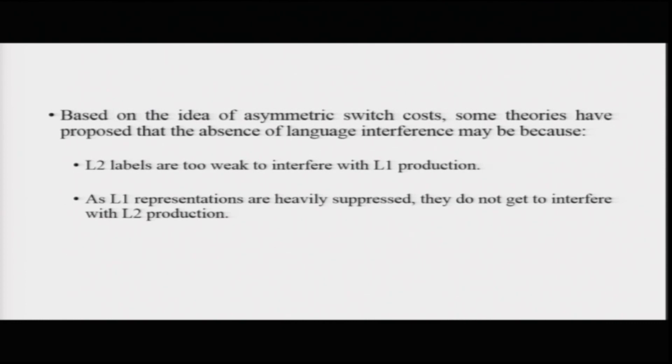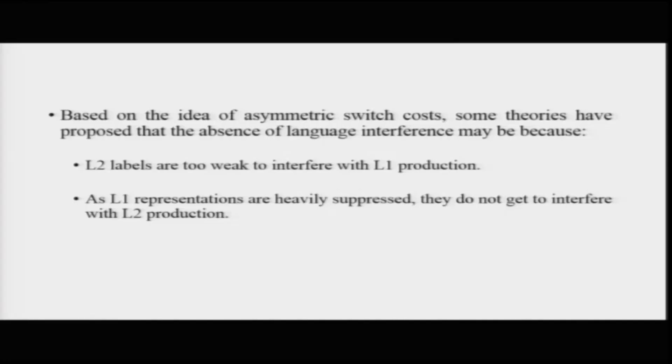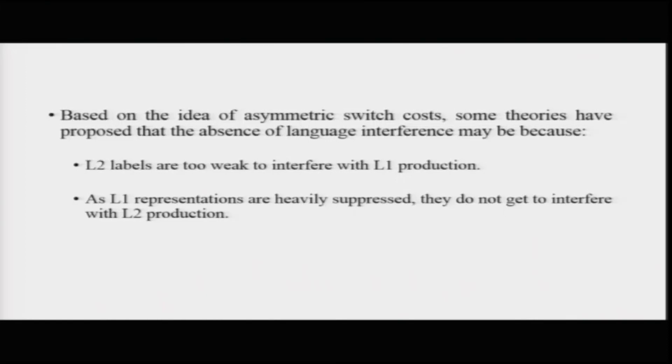This is a very interesting explanation for participants naming in language switching scenarios. It also led to the formulation of particular theories about the importance of response suppression or inhibition in bilinguals, and the idea that bilinguals might have a lot of practice with this. Based on the idea of asymmetric switch costs, some theories said this can explain why people do not experience a lot of interference — because L2 labels are too weak to interfere with L1 production, and as L1 representations are heavily suppressed, they will not be able to interfere with L2 performance.